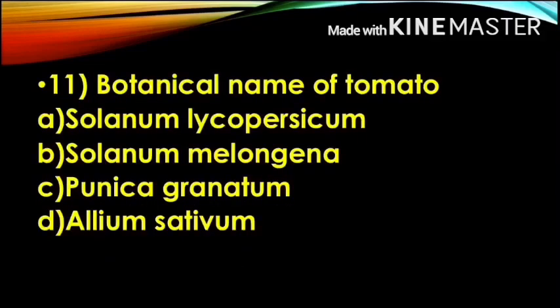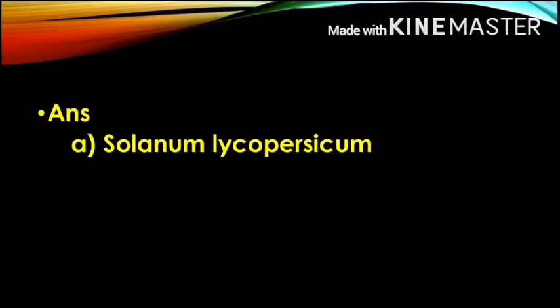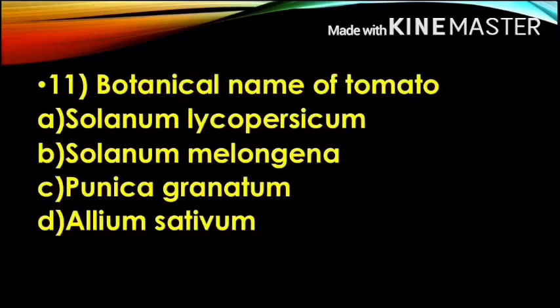Next question: Botanical name of tomato — Option A, Solanum Lycopersicum; Option B, Solanum Melongena; Option C, Punica Granatum; Option D, Allium Sativum. The correct answer is Option A, Solanum Lycopersicum. Solanum Melongena is brinjal, Punica Granatum is pomegranate, and Allium Sativum is garlic.